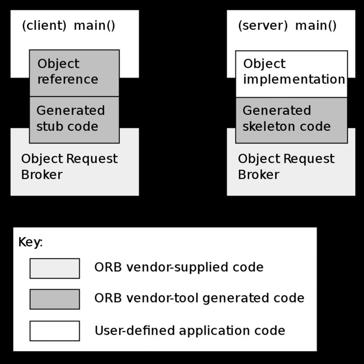CORBA enables communication between software written in different languages and running on different computers. Implementation details from specific operating systems, programming languages, and hardware platforms are all removed from the responsibility of developers who use CORBA. CORBA normalizes the method call semantics between application objects residing either in the same address space or in remote address spaces, same host or remote host on a network. Version 1.0 was released in October 1991.